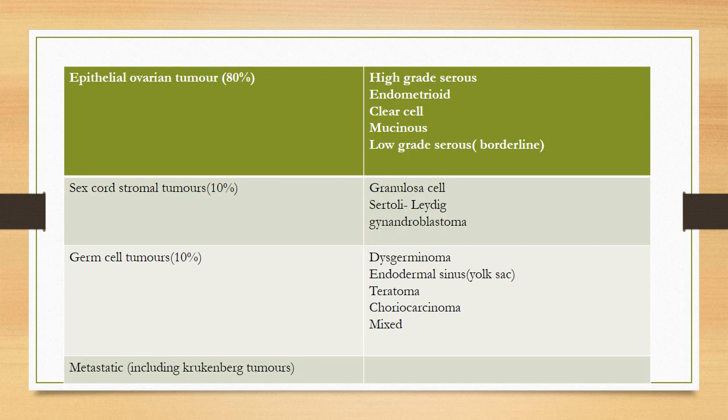Sex cord stromal tumors account for 10% of ovarian tumors and include granulosa cell tumors, Sertoli-Leydig cell tumors, and gynandroblastomas. Granulosa cell tumors secrete estrogen and can present at an earlier age group — girls can present with precocious puberty, in reproductive age with irregular vaginal bleeding, and postmenopausal ladies with postmenopausal bleeding. These are very slow-growing malignant tumors that take very long to recur. Sertoli-Leydig and gynandroblastomas are androgen-producing tumors.